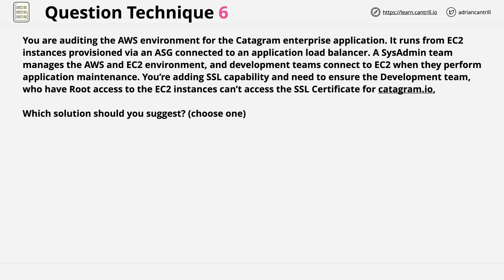Let's compare what you discovered versus the points that I identified. This one isn't too complex. I've highlighted the block of text which gives an overview of the environment because it might matter — EC2 instances provisioned via an auto-scaling group connected to an application load balancer. Then we have two teams: a sysadmin team who manages AWS and EC2, and a development team who connect to EC2 instances, and that could be important.